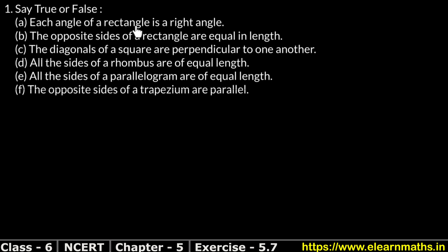First part: each angle of a rectangle is a right angle. Is it true or false? Let's find out. We draw our rectangle. Because the opposite sides of a rectangle are equal, we know that every angle is 90 degrees. So yes, it's true.